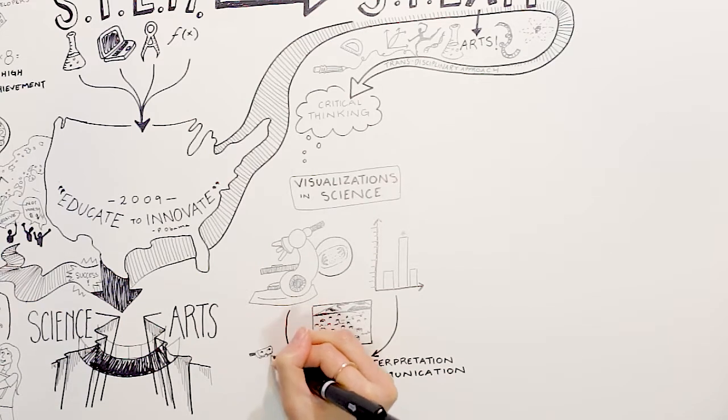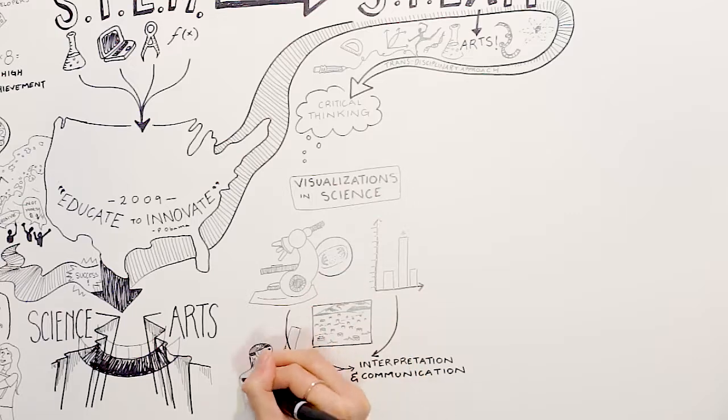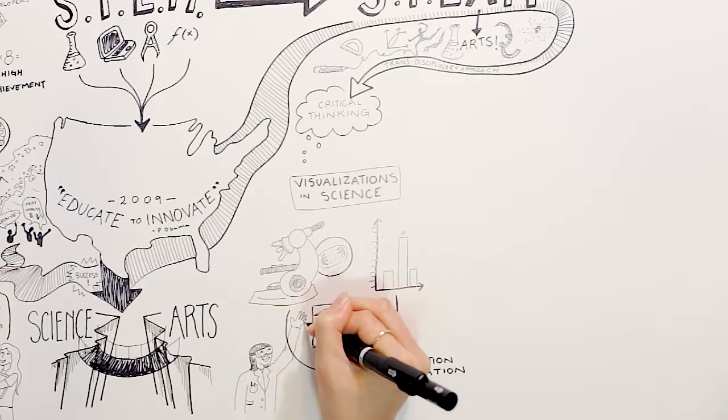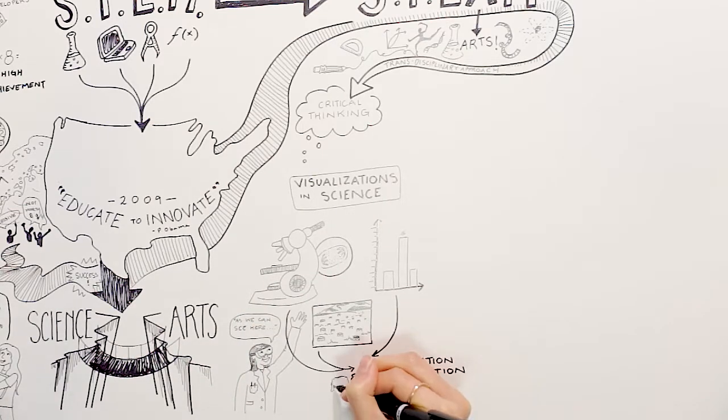For example, to be a proficient scientist, one must learn skills like sketching the field of view of a microscope, drawing a graphical representation, or creating a diagram that explains a scientific phenomenon. In this way, drawing helps students learn how to represent science.